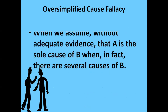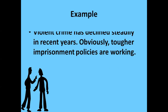The oversimplified cause fallacy occurs when we assume without adequate evidence that A is the sole cause of B, when in fact there are several causes of B. For example: 'Violent crime has declined steadily in recent years — obviously tougher imprisonment policies are working.' This oversimplifies the situation by ignoring other likely contributing causes such as new policing strategies, changing demographics, reduced use of crack cocaine, or other reasons. The arguer makes one reason the sole cause of the outcome.